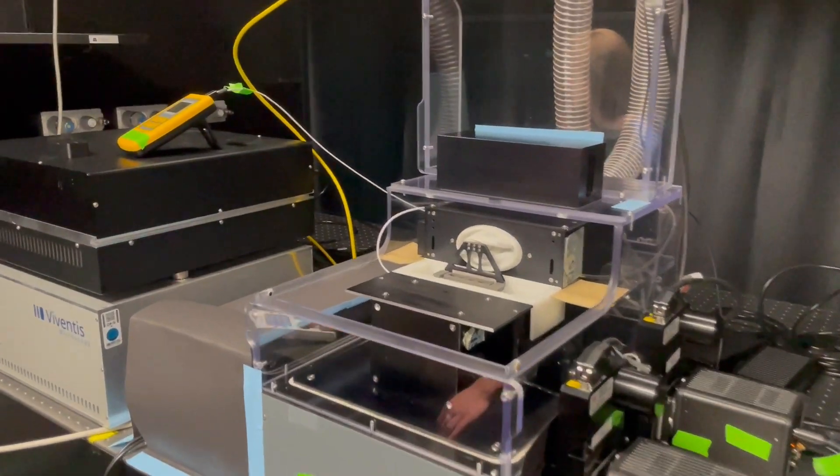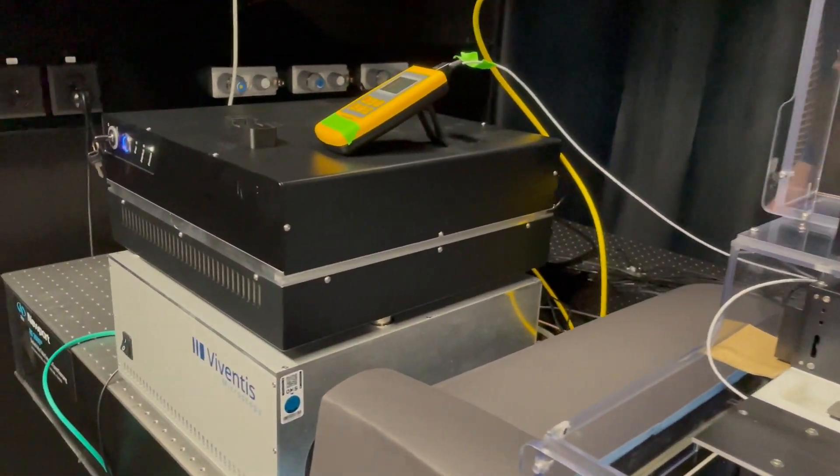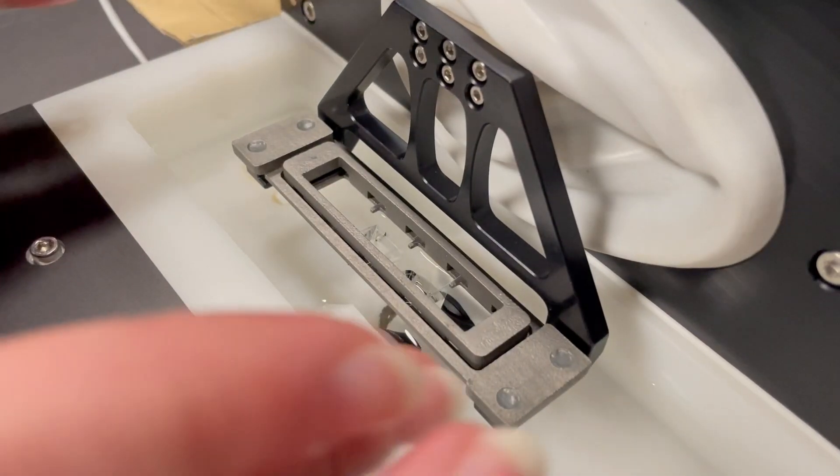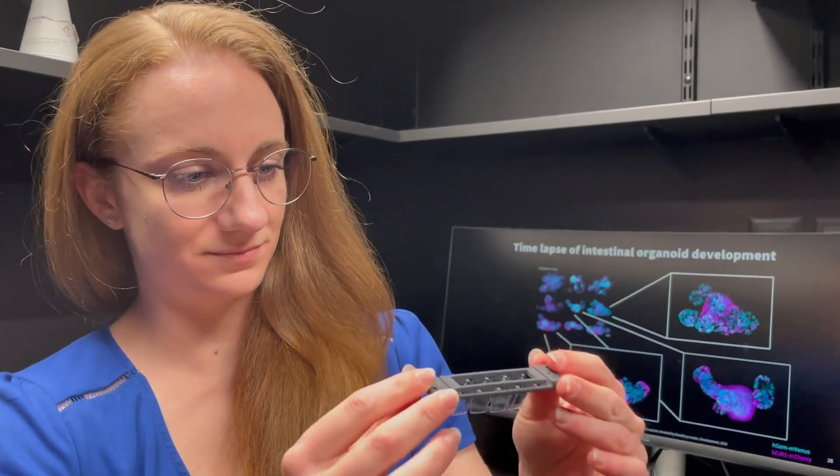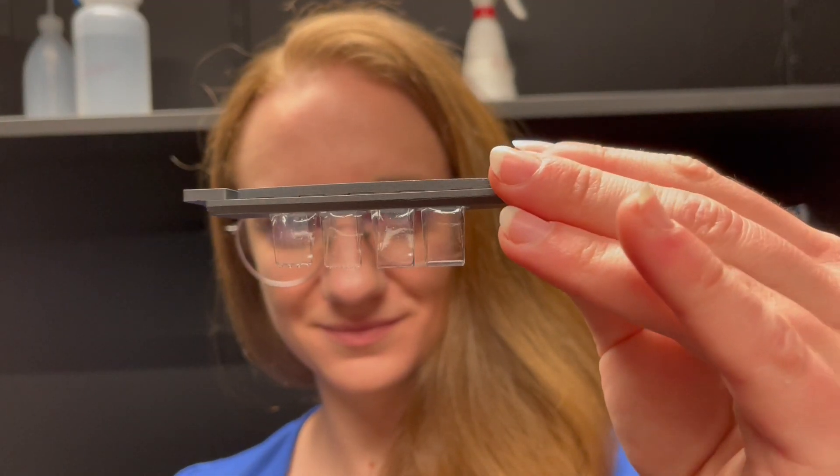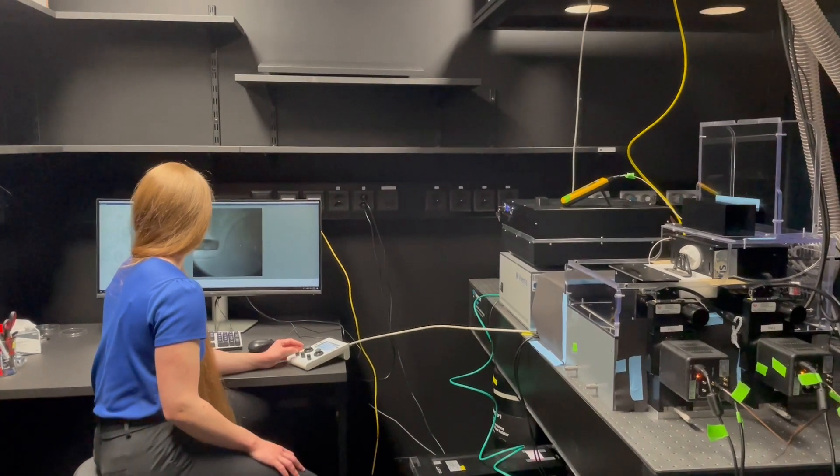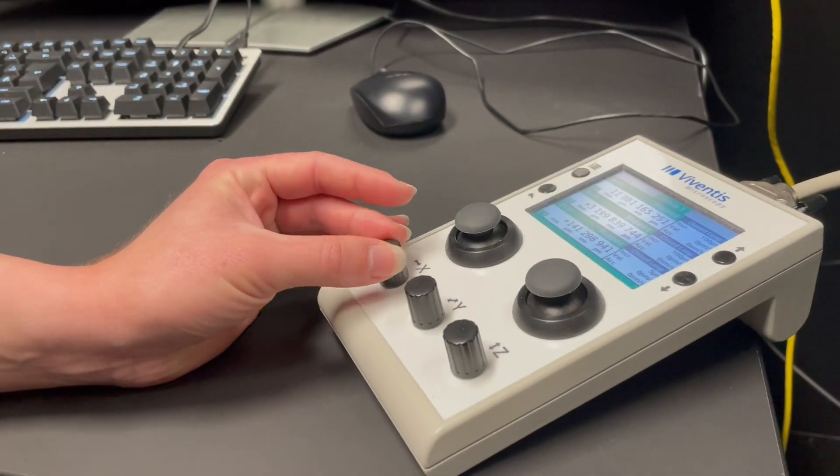Our microscope combines the open-top light-sheet approach together with the multi-view approach. This means we can access the sample anytime for medium changes or to add compounds to the samples, but we can still image them from two opposing sides by the unique arrangement of our objective lenses.